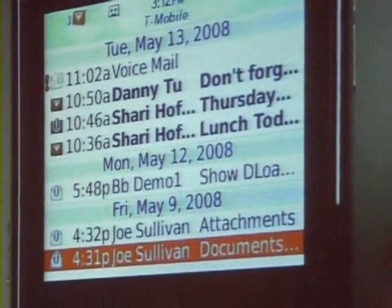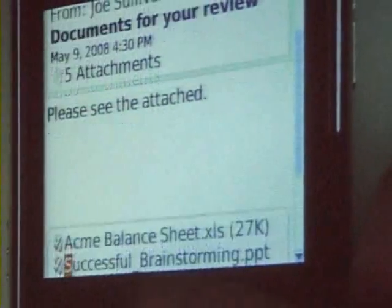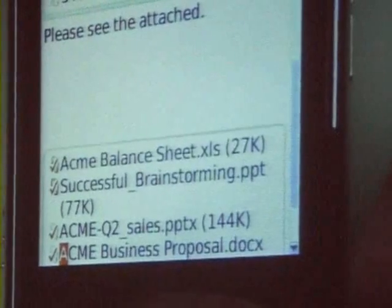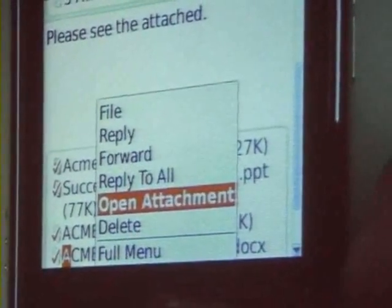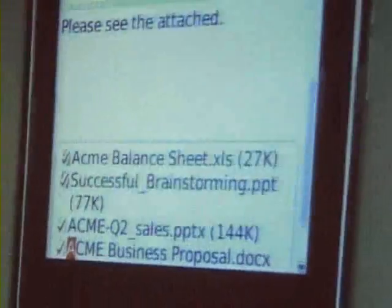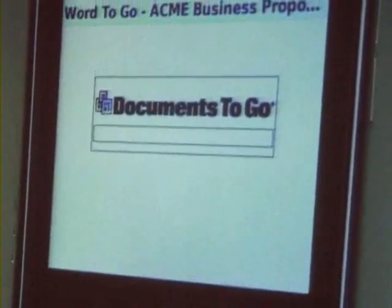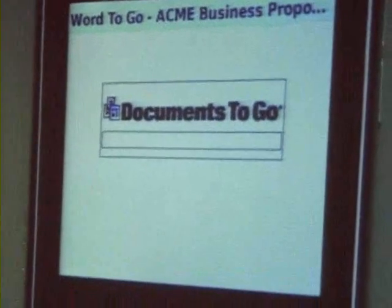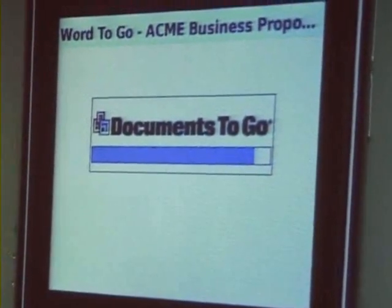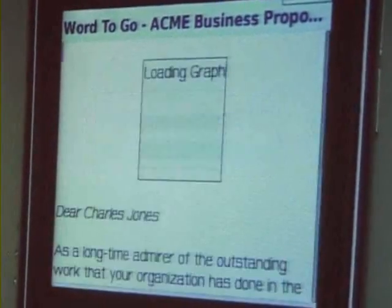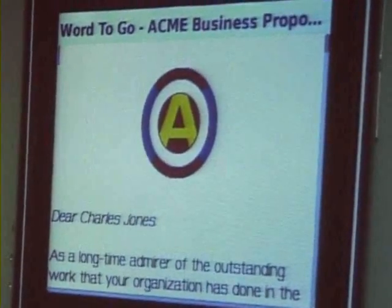If I go back to my other sample email, I've got some already downloaded. Let me show you a quick Word doc. I'm going to open it, and right away that passes the file to our application to be opened natively. This is a sample Acme business proposal file. I just wanted to show you some of the features that we can display.